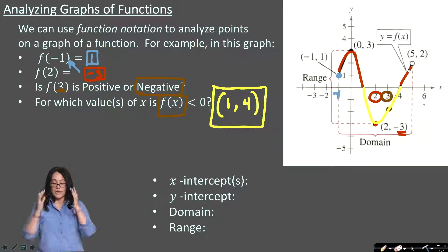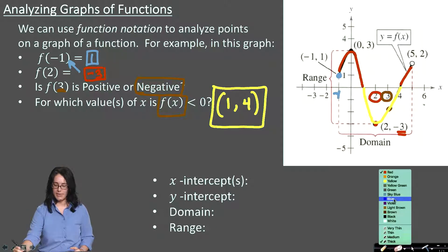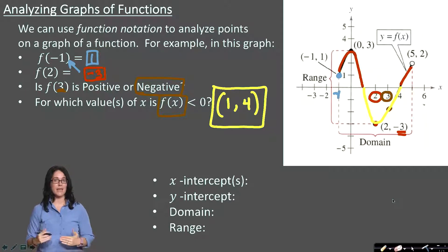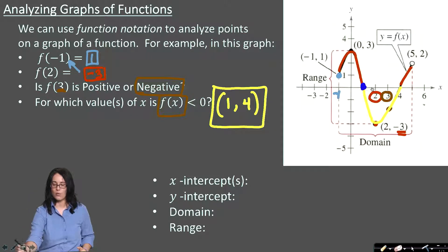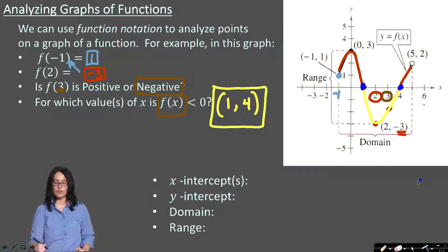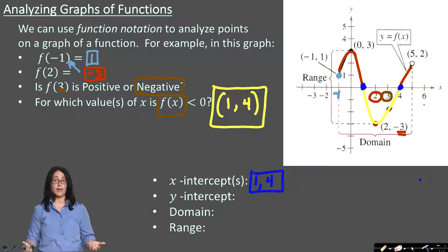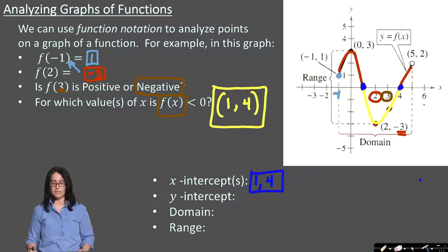What about x-intercepts and y-intercepts? For x-intercepts, that means any time your output is on the x-axis — when your y-value is 0. We see that happening at x equals 1 and at x equals 4. So those are your two x-intercepts. You could also write them as ordered pairs: (1, 0) and (4, 0), since the output y is 0 at those points.